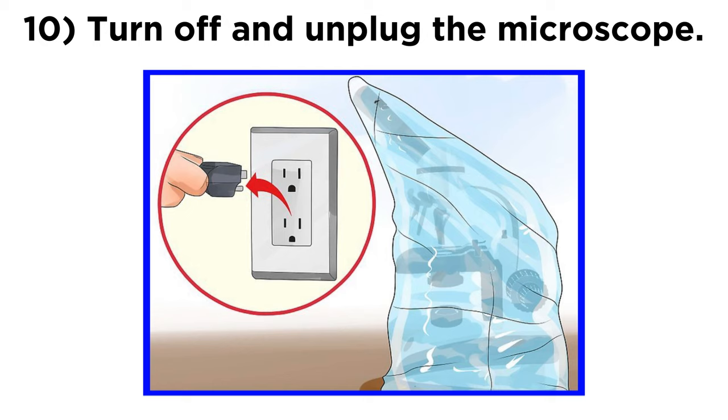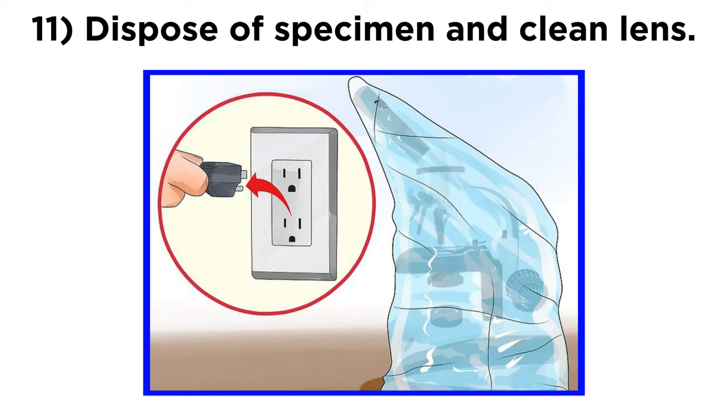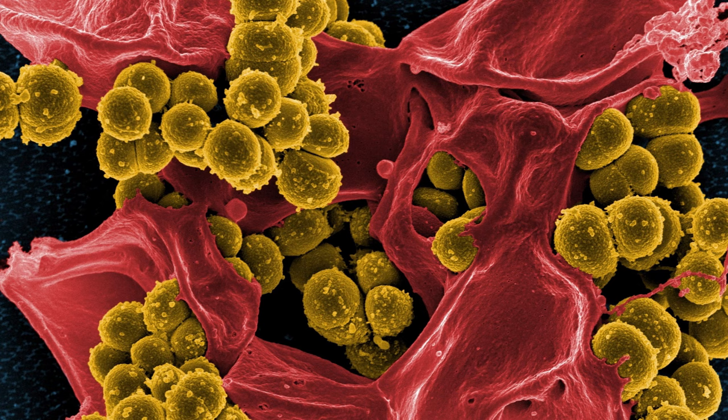Finally, after making all of your observations with the light microscope, you will need to turn off the light source, unplug the microscope, dispose or save the specimen properly, use lens paper to wipe off any oil on the lenses, and replace the microscope cover.